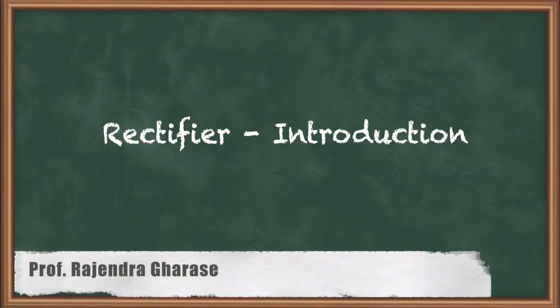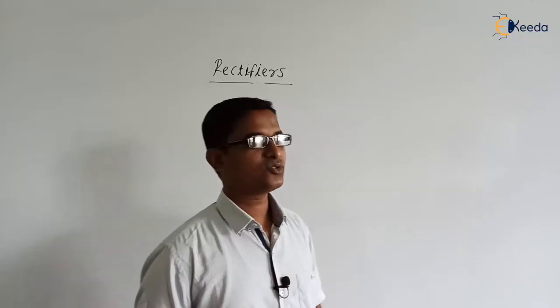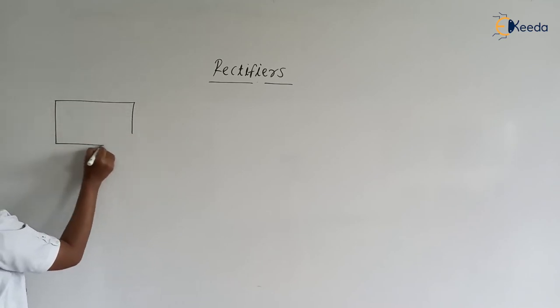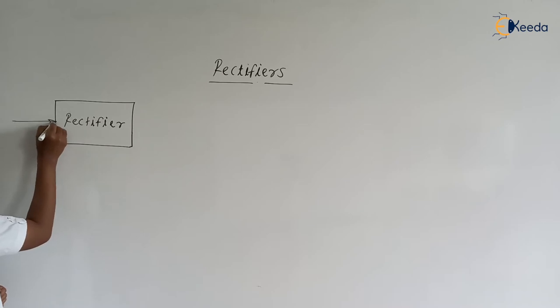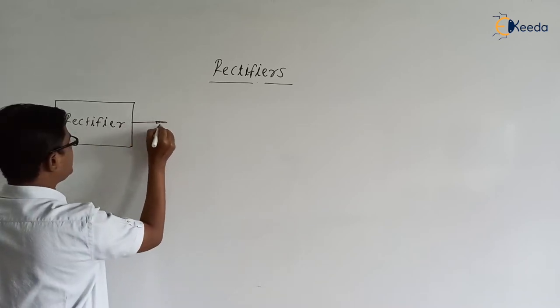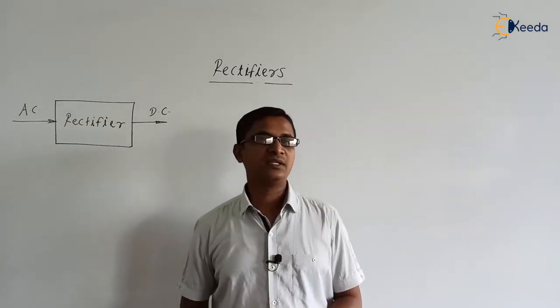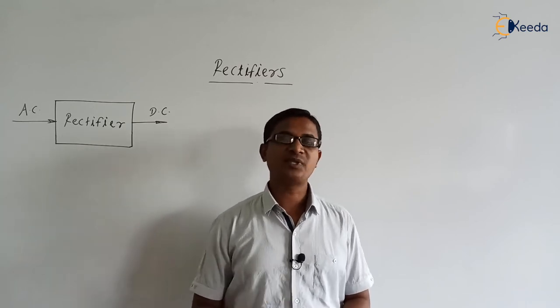Hello friends, in this video we are going to discuss the chapter Rectifier. A rectifier is the circuitry which converts AC to DC. So in the rectifier, the input is AC and output is DC. Rectifier is a very important circuitry as long as industrial applications are considered. In real life, in most applications we use rectifiers.